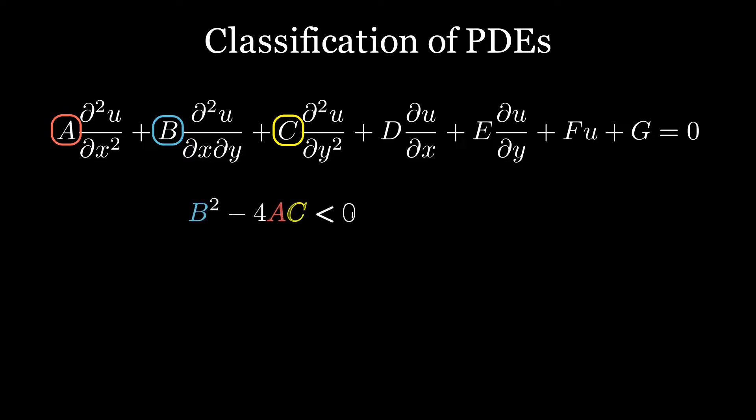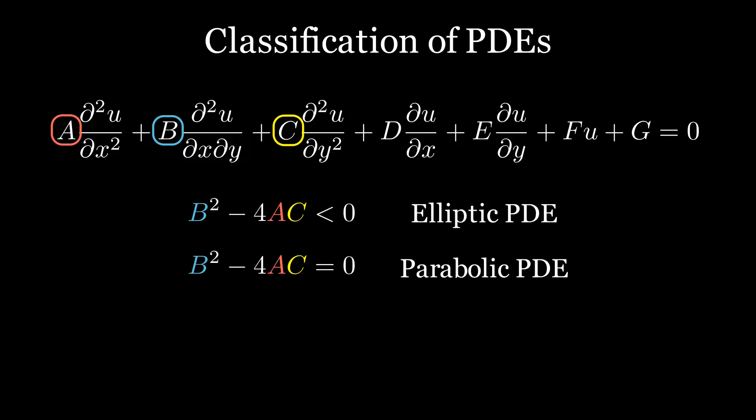If B squared minus 4AC is less than zero, the equation is called an elliptic PDE. If B squared minus 4AC equals zero, the equation is parabolic, and if it is more than zero, the equation is called a hyperbolic PDE. Let's have a look at some examples to see how the PDEs you may have heard about fall into these categories.